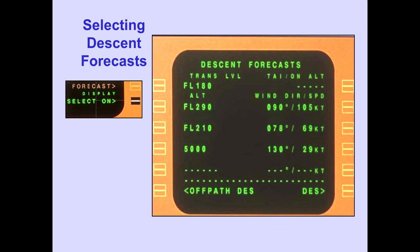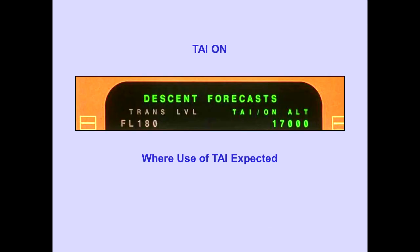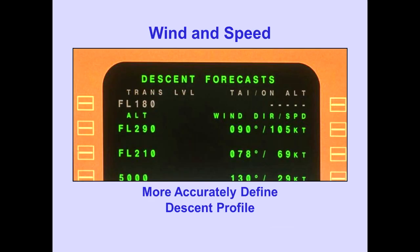Line selecting forecast displays the descent forecasts page. The entered arrival procedure is used to establish the QNH transition level, and the value can be changed by the flight crew. A thermal anti-ice on altitude can be entered for an altitude where the use of thermal anti-ice is expected to occur. For up to four altitudes along the descent route, wind direction and airspeed can be entered, enabling the FMC to more accurately define the computed descent profile.